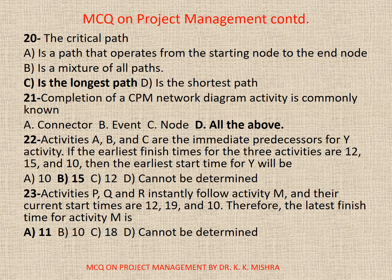Question 20: The critical path — Options: A. Is a path that operates from the starting node to the end node; B. Is a mixture of all paths; C. Is the longest path; D. Is the shortest path. If you have studied it, you will find C is the correct option — the critical path is the longest path. Question 21: Completion of a CPM network diagram activity is commonly known as — Options: A. Connector; B. Event; C. Node; D. All the above. Correct option is D: All the above.